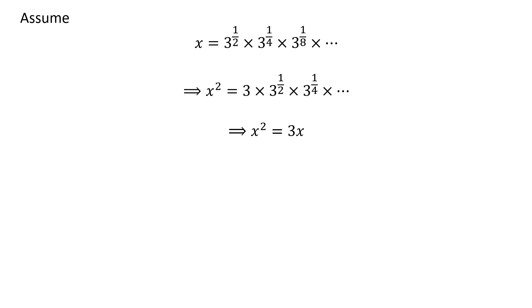As square root of 3 times 4th root of 3 and so on is equal to x as per our assumption, so x squared is equal to 3 times x.